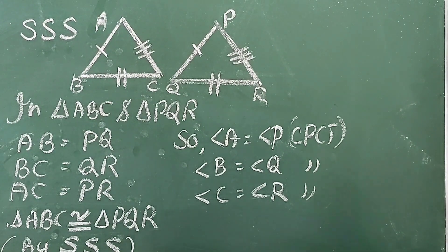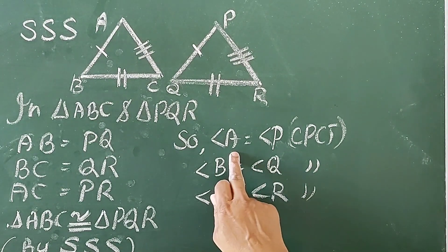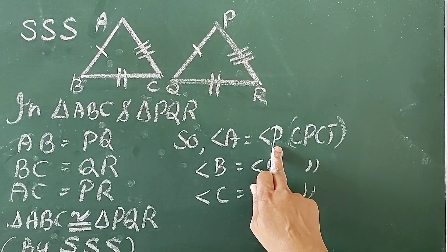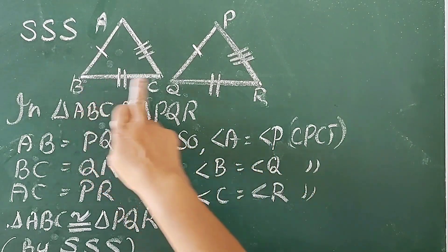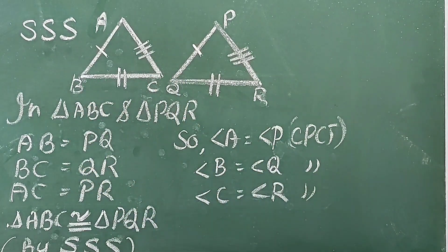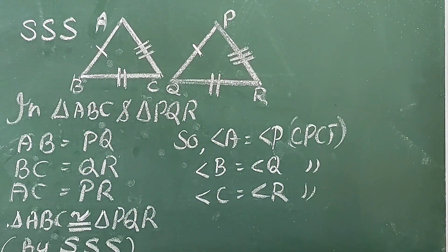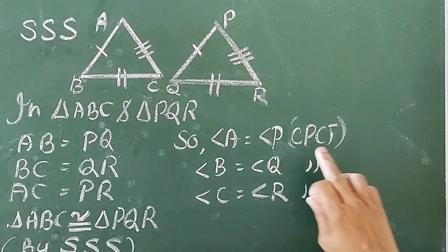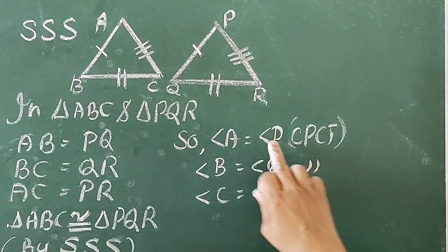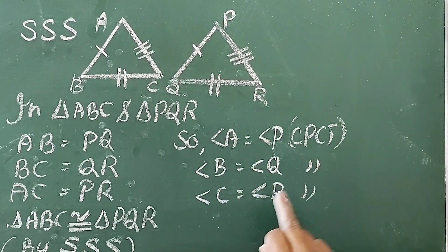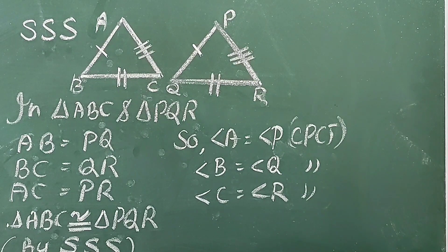So, angle A equal to angle P, angle B equal to angle Q, angle C equal to angle R — corresponding parts of congruent triangles.